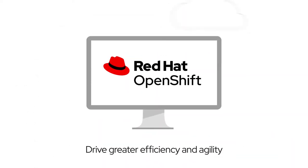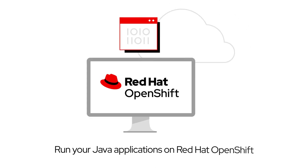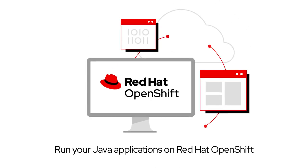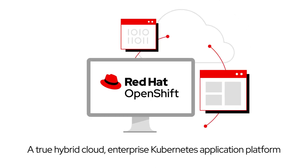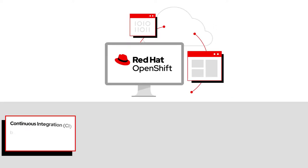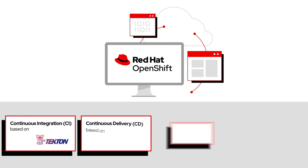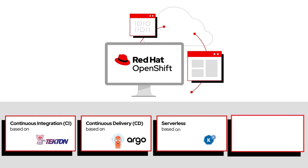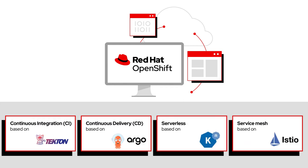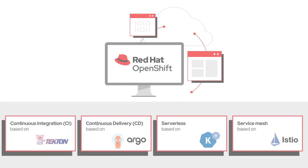Drive greater efficiency and agility by running your Java applications on Red Hat OpenShift, a true hybrid cloud enterprise Kubernetes application platform that automates the provisioning, management, and scaling of applications, allowing you to shift workloads to the cloud more easily.